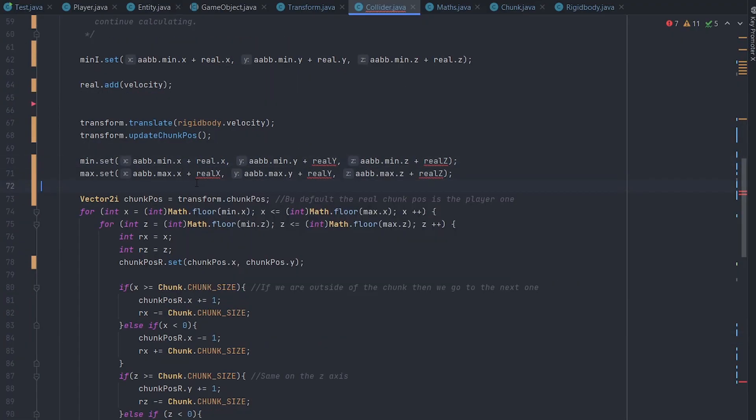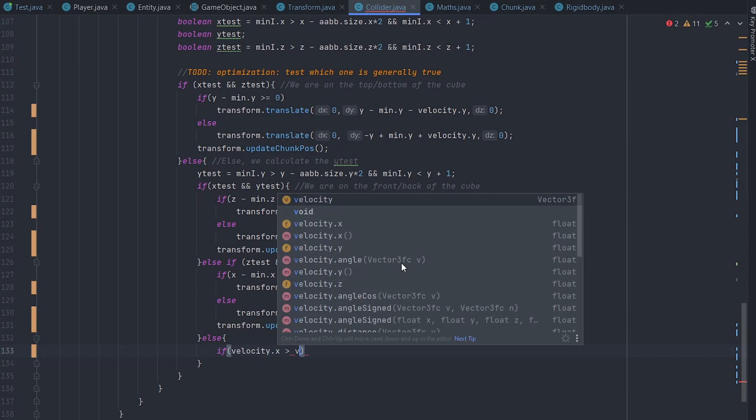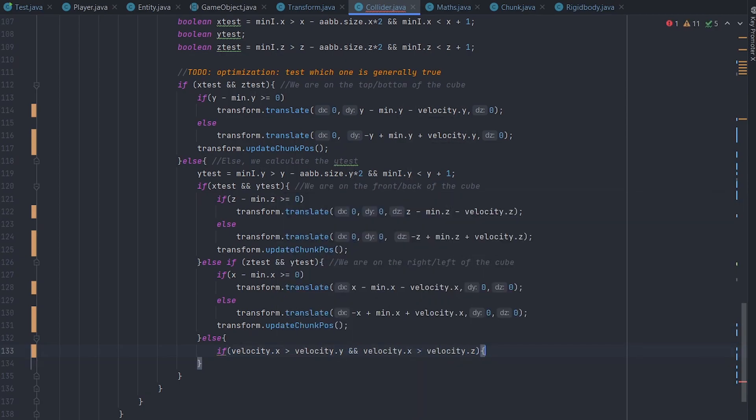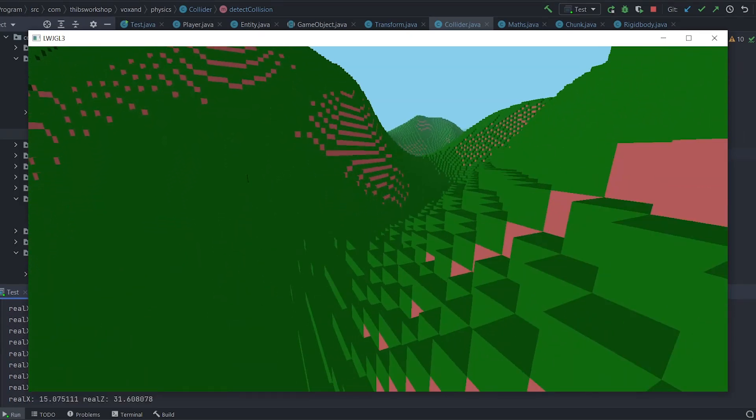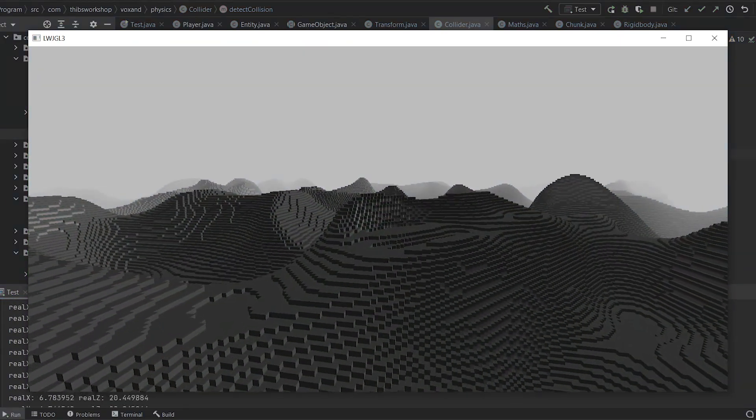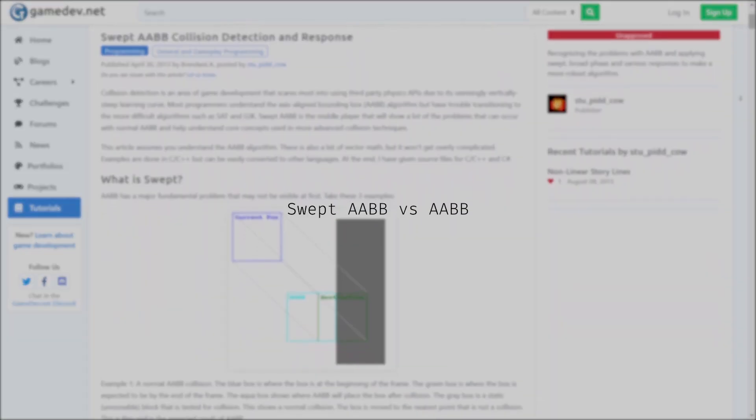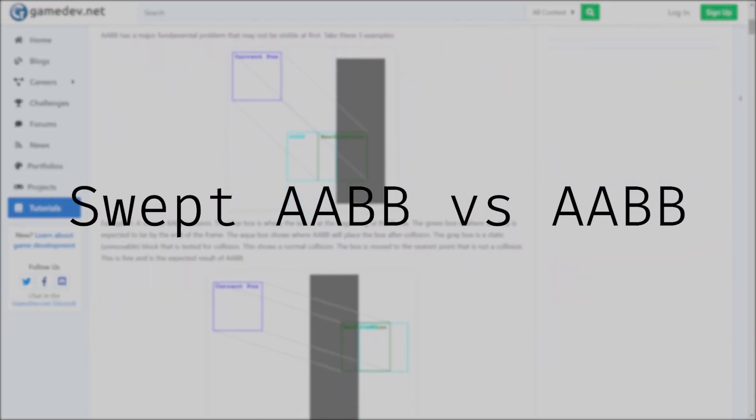At first, I recycled the detection part of the algorithm and tried implementing my own correction. But this wasn't efficient, and worst, it wasn't working. I read a lot on the internet, tried many implementations, but nothing was successful. Until I found this article describing a swept AABB versus AABB algorithm.